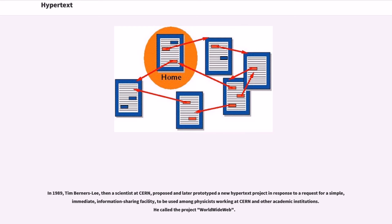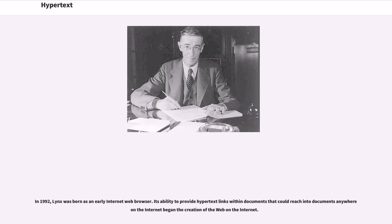In 1989, Tim Berners-Lee, then a scientist at CERN, proposed and later prototyped a new hypertext project in response to a request for a simple, immediate, information-sharing facility to be used among physicists working at CERN and other academic institutions. He called the project World Wide Web. In 1992, Lynx was born as an early internet web browser, and its ability to provide hypertext links within documents that could reach into documents anywhere on the internet began the creation of the web.